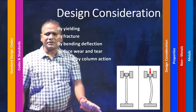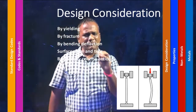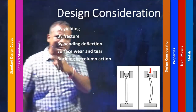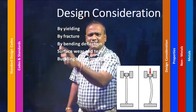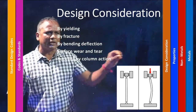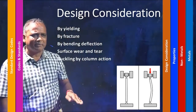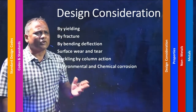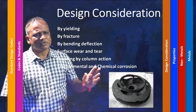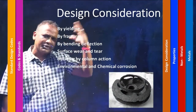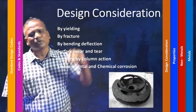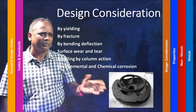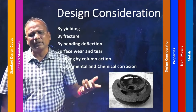These are design considerations where we need to take care before or while designing an element — any one of these will be present before we design a machine element. Last would be environmental and chemical corrosion, which happens because of moisture content in the system or environment. This environmental chemical reaction is commonly called corrosion.